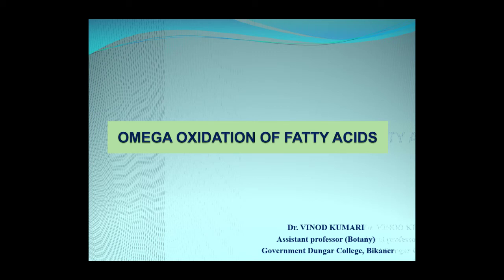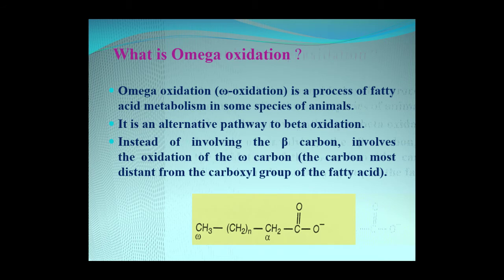In this e-lecture we are going to study about the omega type of oxidation of fatty acids. Omega oxidation is a process of fatty acid metabolism which involves the oxidation of the omega carbon, instead of the beta carbon as in beta oxidation. The omega carbon is the carbon which is the most distant from the carboxylic group of the fatty acid. Omega oxidation of fatty acid is an alternative pathway to beta oxidation in some species of animals.